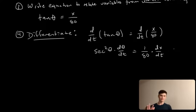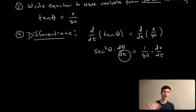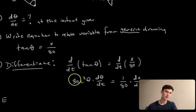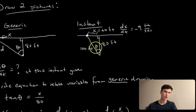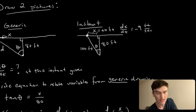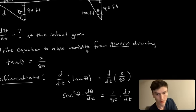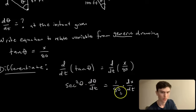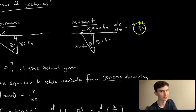Step 5: evaluate at the instant given. We can find all the terms. For sec²(θ): secant is 1/cosine, and cosine is adjacent over hypotenuse = 80/100. So secant θ = 100/80. We know dx/dt = −9 from the instant picture, and 1/80 is a constant. Everything is known except dθ/dt, which is what we're solving for.